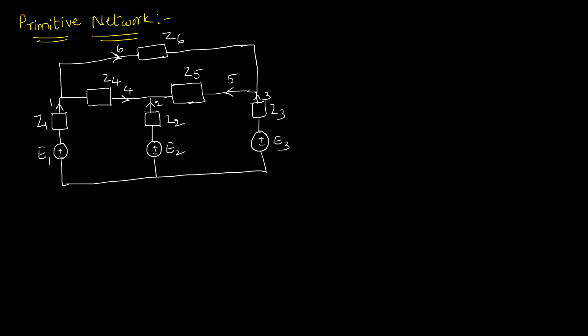So this is an electrical network. This electrical network is having six branches. All six are having different elements or different values of impedances.